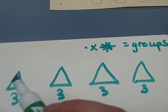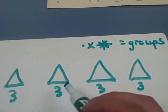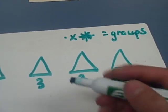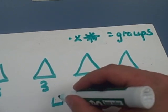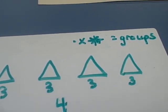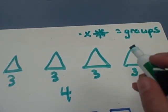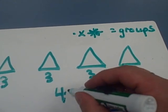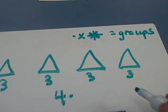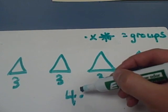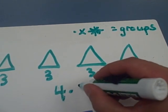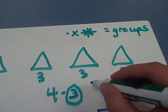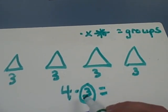And if I have one group of three, two groups of three, three groups of three, and four groups of three, then that's what my multiplication equation is going to look like. I have one, two, three, four groups. I'm going to use that symbol for groups of three, and I'll just draw a little circle around the threes to show that that's the group size — that's how many sides are in each group.